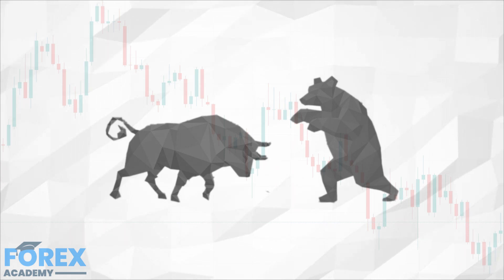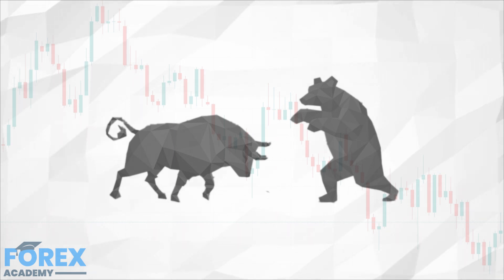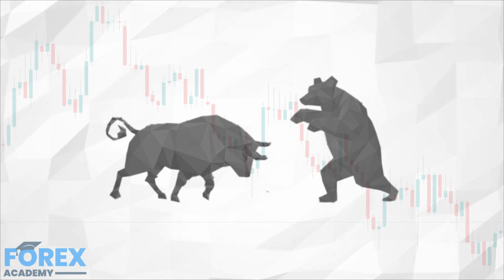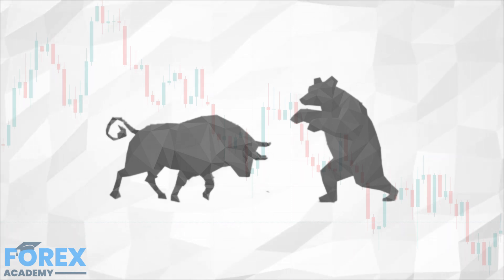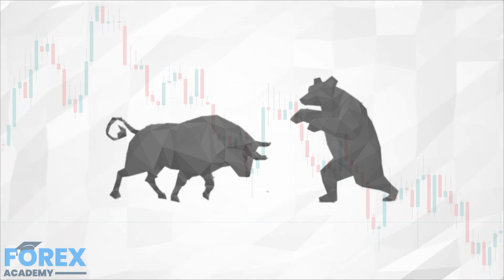Whether the market is moving up or down, there is an opportunity for profit. Cryptocurrencies have been the most volatile tradable asset class in decades, which makes them the most sought-after place for traders as it offers the most opportunity. However, trading brings risks along with the opportunities, so how can we overcome these risks to make sure the odds are in our favour when trading, even in a bear market?